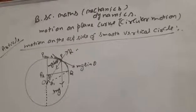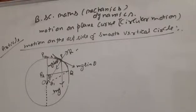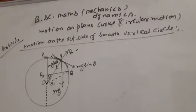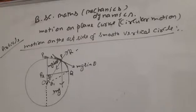Based on mechanics, the topic is motion in a plane — specifically circular motion. A particle is in motion on the outside of a smooth circular path. There is a circle in the figure; O is the center and P1 is the highest point. A heavy particle slides down on the outside of a smooth circle from the highest point from rest. Let us consider the setup.